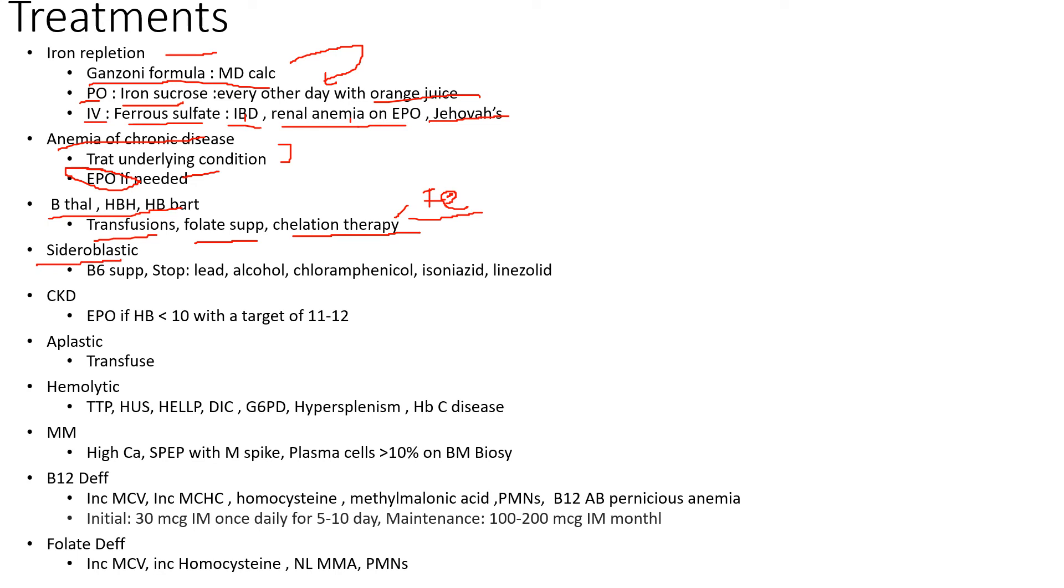Sideroblastic anemia, remember, is when our hemoglobin isn't formed properly. You want to look for lead, you want to supplement with B6. Remember B6 is one of the essential vitamins in the early hemoglobin production pathway, which we can go over in another video, but remember B6 because it's very crucial. You want to stop them from having alcohol, you want to look for drugs like chloramphenicol, isoniazid, linezolid—these are all culprits for a sideroblastic anemia. So review medications, very important.